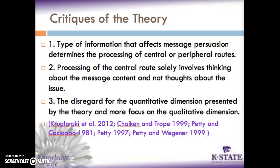The second misinterpretation is that processing via the central route solely involves thinking about the message content and not thoughts about the issue. As Petty and Cacioppo stated, if the issue is very important to the person but the person doesn't understand the argument being presented in the message, or if no arguments are actually presented, then elaboration of arguments cannot occur. Nevertheless, the person may still be able to think about the issue; therefore, issue-relevant thinking is still a part of the central route and is necessary for one to think about the message content.